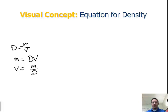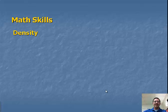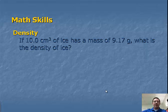There we go. So on the next slide, kind of got a preview of that one already. We can run through an example problem. So if we've got 10 cubic centimeters of ice, so we've got a volume of ice. It has a mass of 9.17 grams. What is the density of ice?